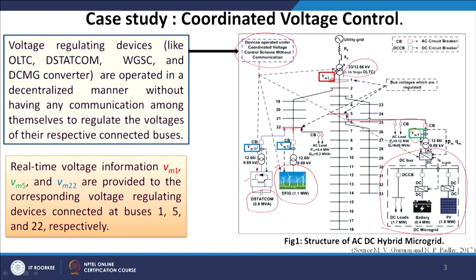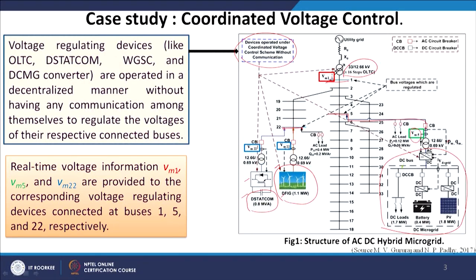Real-time voltage information at bus numbers 1, 5, and 22 is provided to the corresponding voltage regulating devices connected at those buses. Overall, these devices control the voltage at their respective buses — bus number 1, 22, and 5 — but they do not really communicate among themselves to see what kind of scenario other buses face.